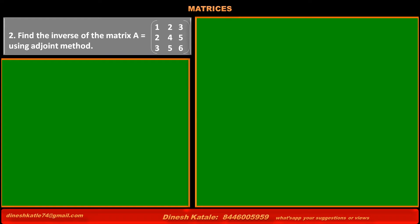Problem 2: Find the inverse of matrix A of order 3×3 having elements 1, 2, 2, 3, 2, 4, 5, 3, 5, 6 using the adjoint matrix. First, we have to write matrix A as it is, then we have to find the determinant of matrix A.